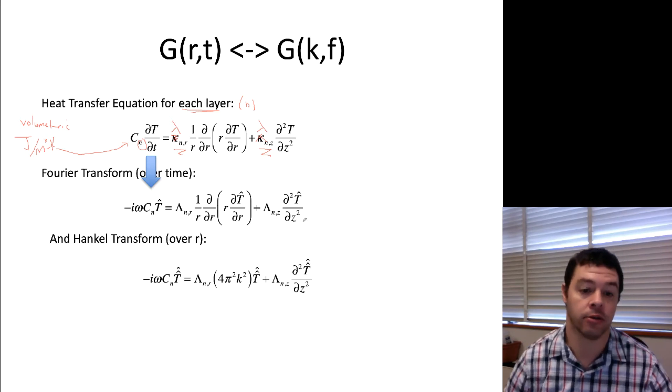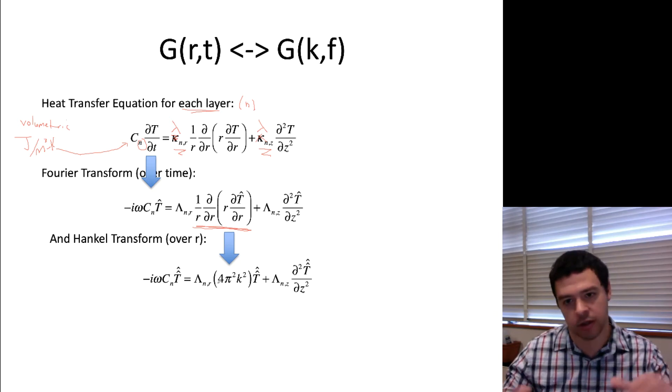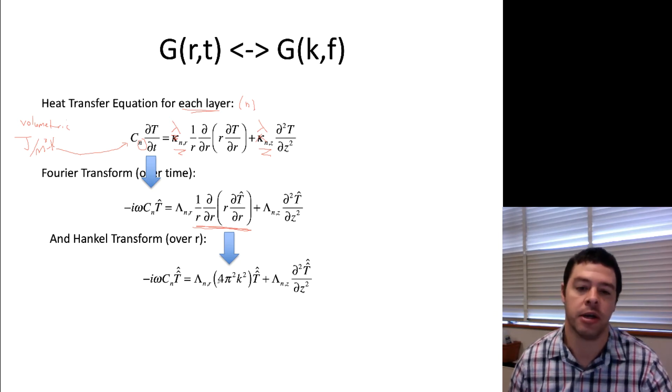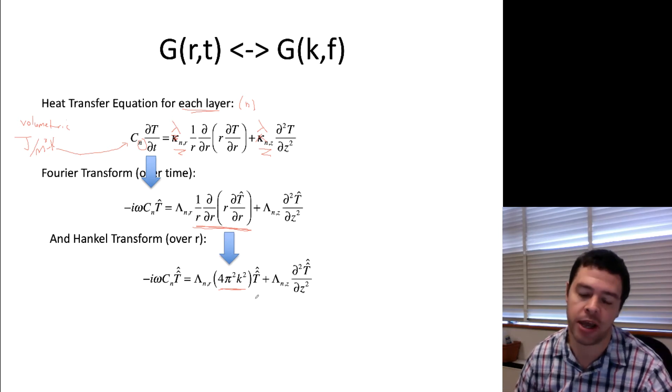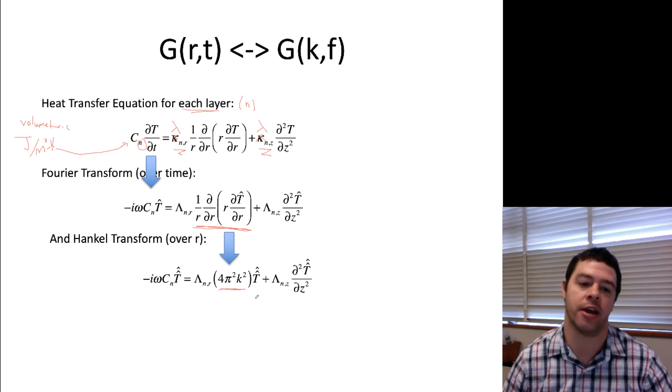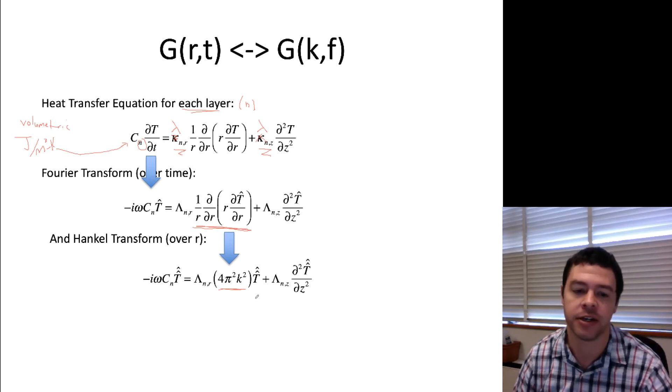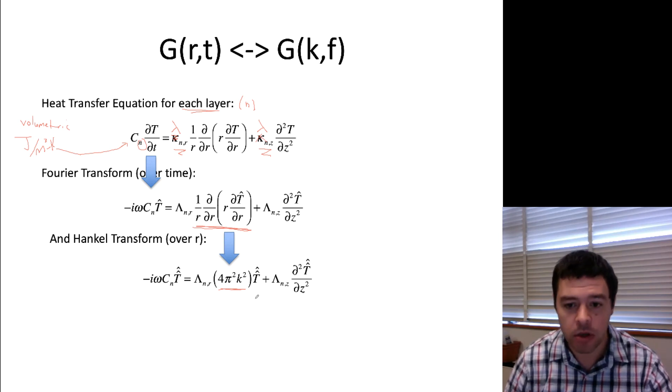Then I'm going to take the Hankel transform in space. And it turns out that the Hankel transform, when you have something that looks like the Laplacian in the r direction, pops out a factor of 4 pi squared k squared. This just comes from basic... This is actually part of why the Hankel transform is defined the way it is. It has this nice property when applied to the Laplacian.